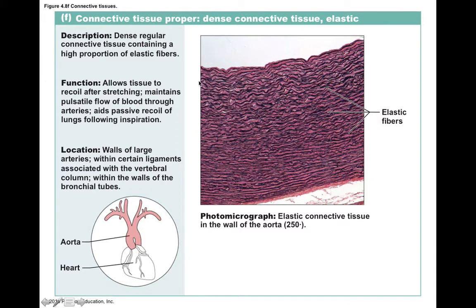Elastic connective tissue is named for its lots of elastic fibers. It almost looks like dense regular in that the fibers go in the same direction, but elastic fibers are a little thicker in staining and appear as darker, wavier lines. This tissue is located in structures that need a lot of elastic recoil: large arteries, certain ligaments, along the vertebral column, and in the walls of the bronchial tubes, which need to stretch and recoil back to a resting shape. For example, the aorta has elastic connective tissue in its walls to expand and accommodate the pressure of blood ejected from the heart.